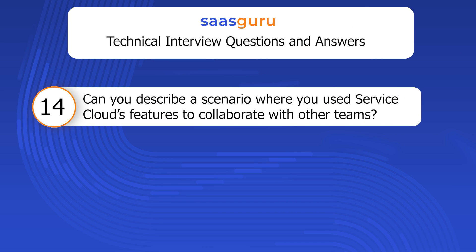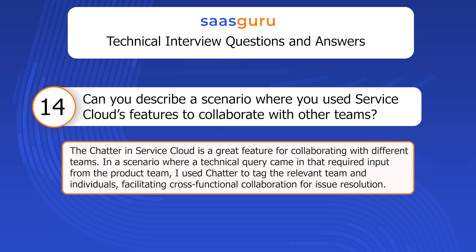Question 14: Can you describe a scenario where you used Service Cloud's features to collaborate with other teams? Chatter in Service Cloud is a great feature for collaborating with different teams. In a scenario where a technical query came in that required input from the product team, I used Chatter to tag the relevant team and individuals, facilitating cross-functional collaboration for issue resolution.